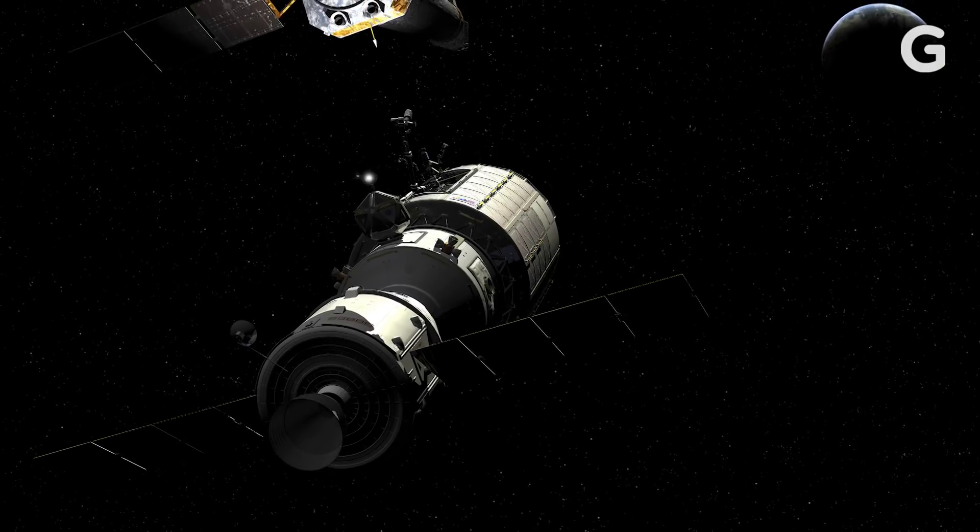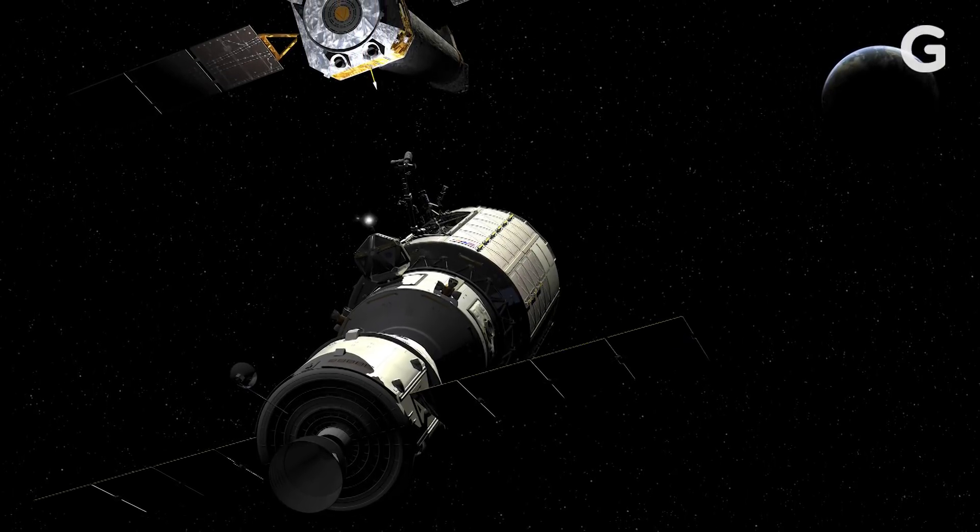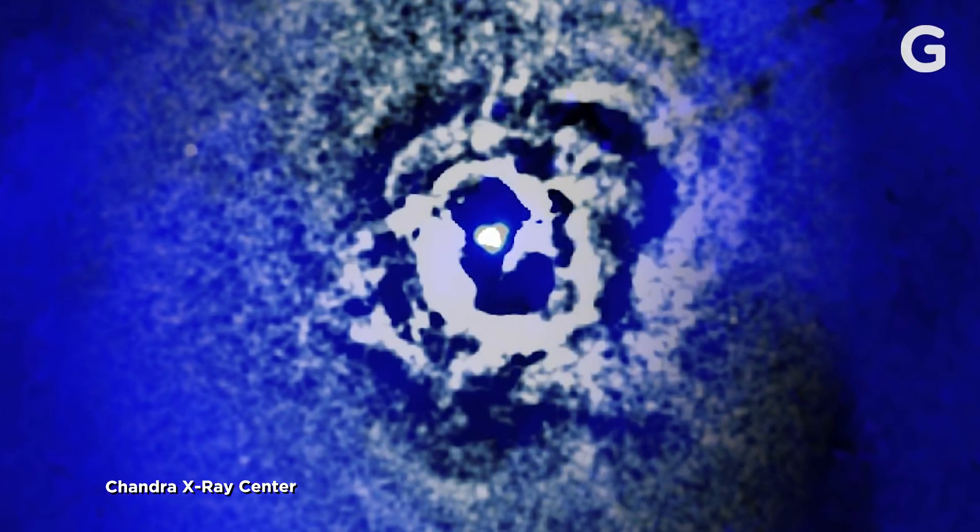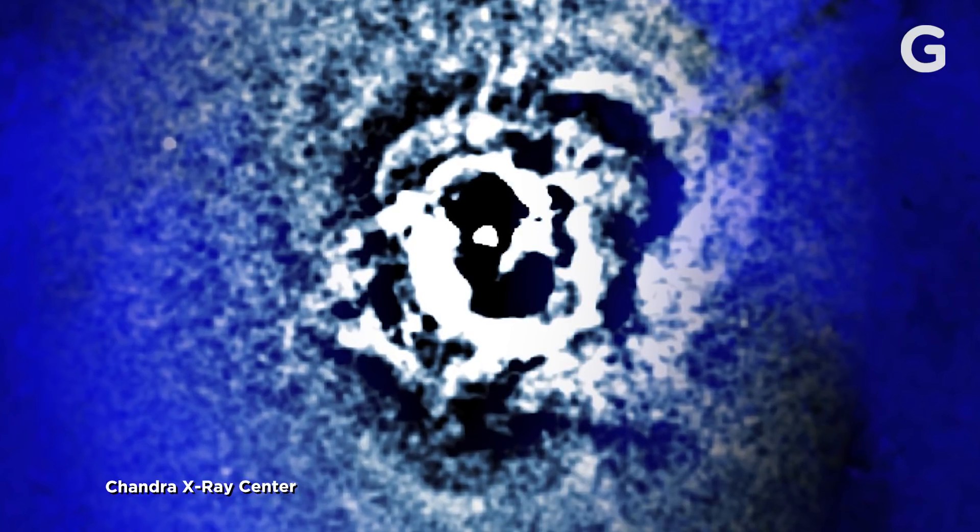To figure this out, we use telescopes, and in particular, we use X-ray telescopes. The Chandra X-ray Observatory, which has been in space for over 20 years now, is a great tool for looking at galaxy clusters and studying the temperature structure, seeing what parts are hotter, what parts are cooler, where is the energy being lost.